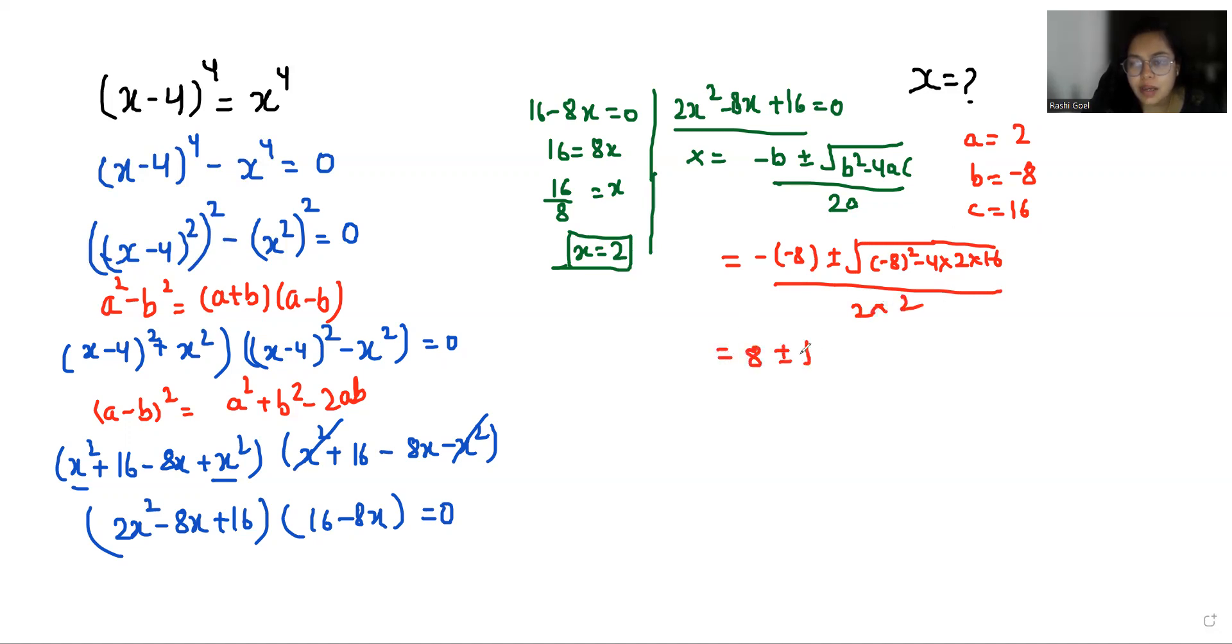This gives 8 ± √(64 - 128)/4. 16 × 4 is 64, times 2 is 128. So we have 8 ± √(-64)/4.